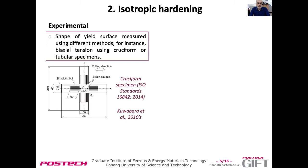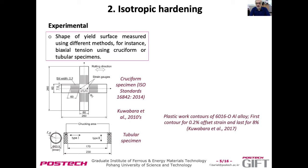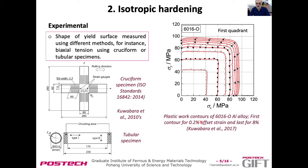To look at the shape of the yield surface, we can do biaxial experiments, like biaxial tension. This work was done by Professor Kuwabara. The alloy is 6016, an aluminium alloy, in the first quadrant so the stresses are positive. While the material is strongly textured, we see areas with low curvature and areas with high curvature, which is also apparent experimentally.